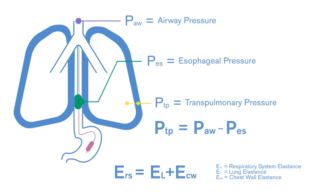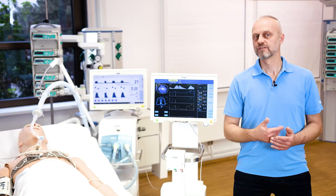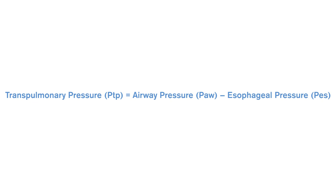Moreover, the esophageal pressure allows estimation of the respiratory drive of spontaneously breathing patients. So how is this information obtained by Pumovista? For calculating transpulmonary pressure, the airway pressure and the esophageal pressure need to be known.